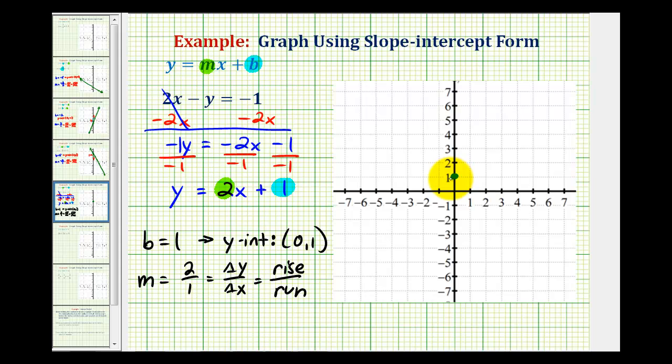So from the y-intercept, we'll go up 2 units and right 1. Again, we're going up 2 units because the numerator is positive 2, which tells us the change in y, and we're moving right 1 unit because the denominator is positive 1, which represents the change in x.